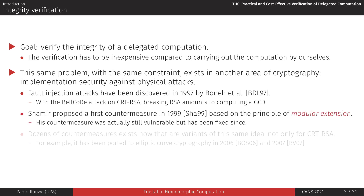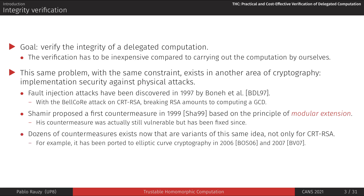A first countermeasure was proposed in 1999 based on the mathematical principle of modular extension, even if it was not entirely understood that way back then. Indeed, dozens of patents were filed and accepted that more or less do the very same thing in a slightly different way. Since then, it was understood that the essence of these countermeasures was the modular extension principle, and that it was not actually tied to RSA modular exponentiation. It was successfully ported to other cryptosystems using elliptic curve cryptography, for example.